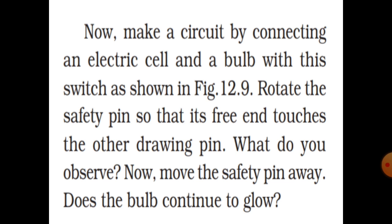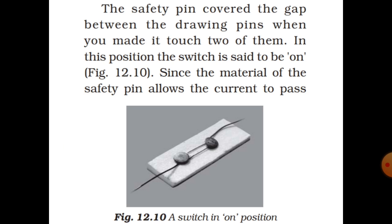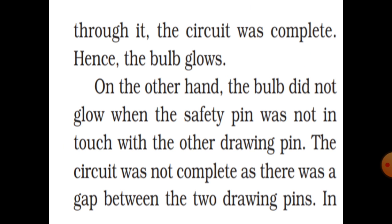Now make a circuit by connecting the electric cell and a bulb with this switch as shown in the figure. Rotate the safety pin so that it touches the other drawing pin. The safety pin bridges the gap between the two drawing pins; in this position the switch is said to be on. Since the material of the safety pin allows current to pass through it, the circuit is complete and the bulb glows.